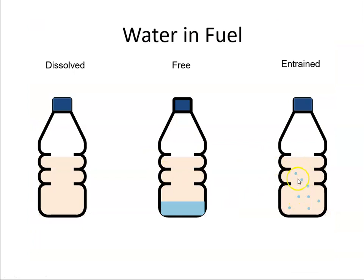Entrained water is suspended in tiny droplets in the fuel. Individual droplets may or may not be visible to the naked eye, but they can give the fuel a cloudy or hazy appearance depending on their size and quantity. Generally, when you agitate free water and fuel together, you can get entrained water.